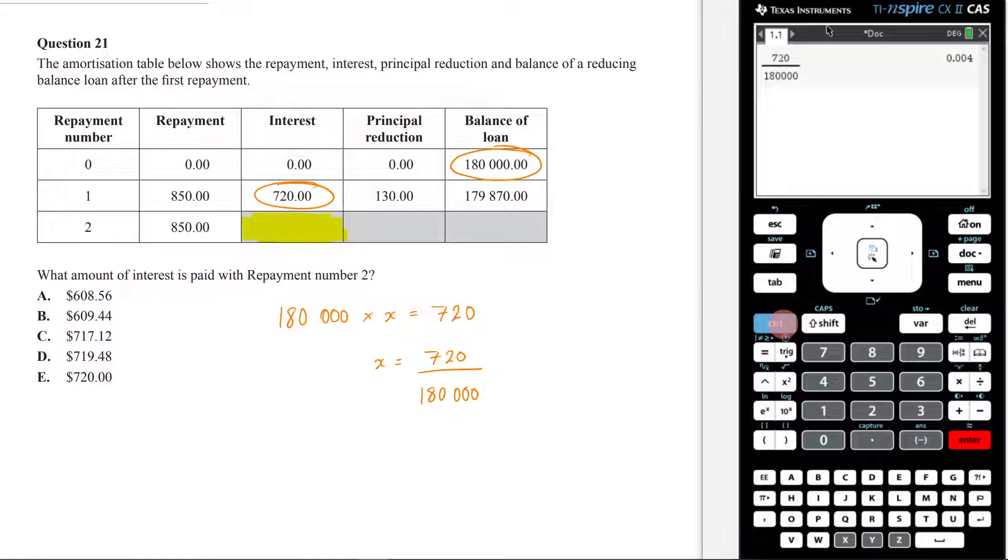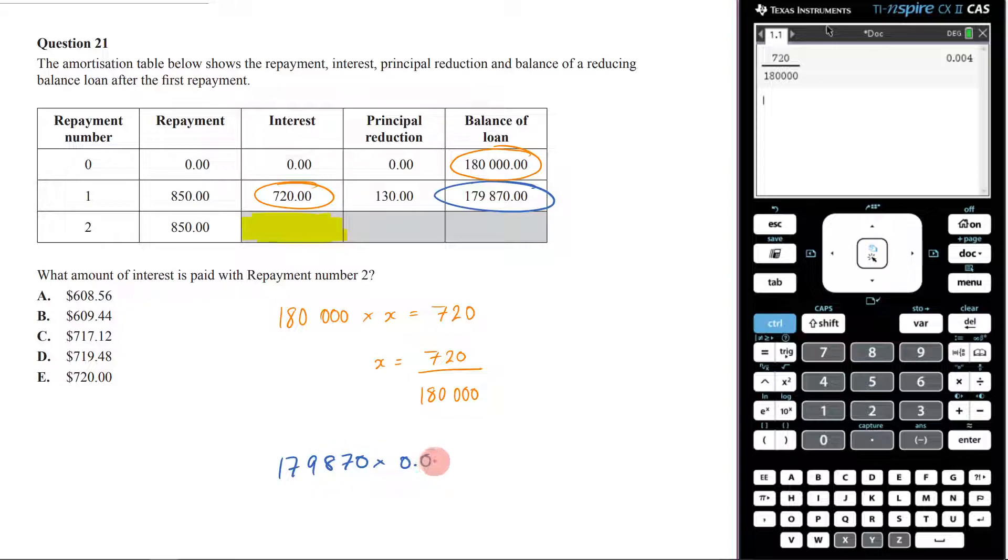So now what I'm going to do is I'm going to take and I'll grab, put this in another color. I'm now going to grab this 179870 and times it by that interest rate that we've just found 0.004. So times by 179870. And that's going to be that 719.48. So it's going to be D right there. That is our answer.